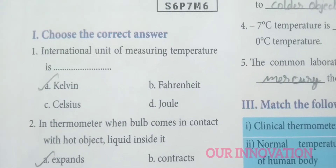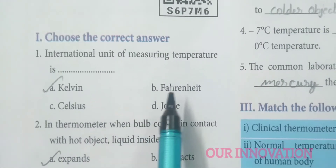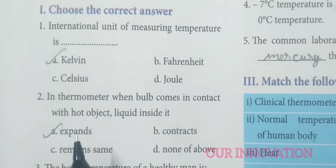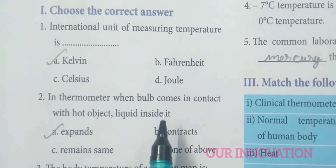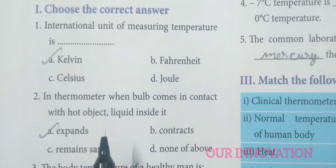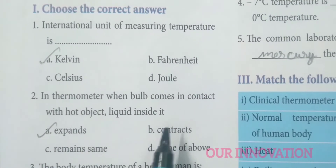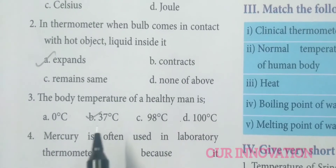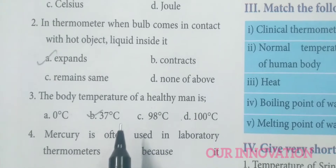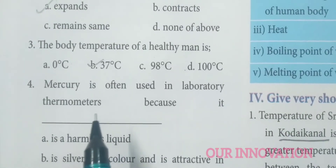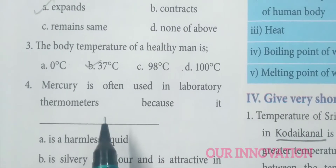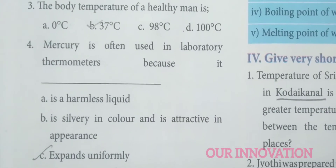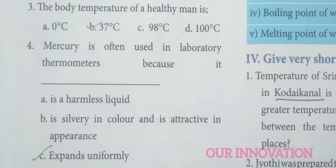Let us choose the correct answer. The international unit of measuring temperature is Kelvin. In a thermometer, when the bulb comes in contact with a hot object, the liquid inside it expands. The body temperature of a healthy man is 37 degree Celsius. Mercury is often used in laboratory thermometers because it expands uniformly.